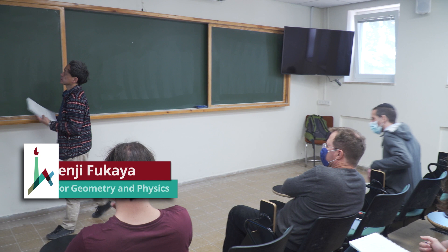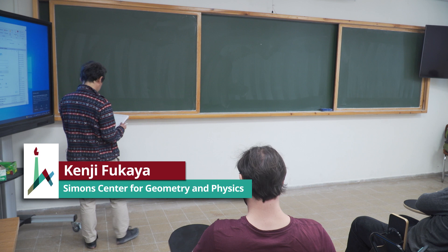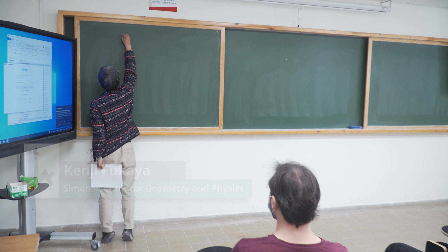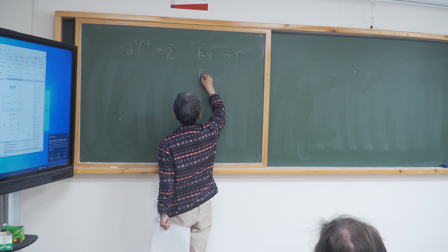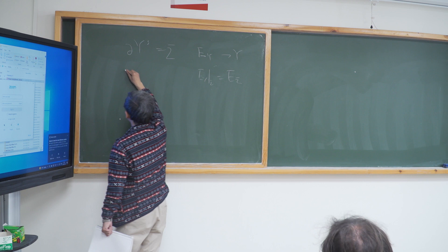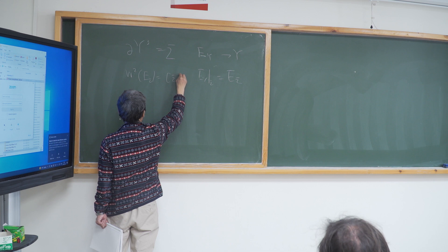In the last lecture, the second talk, I omitted one part of the story that I want to discuss now. Consider a three-manifold Y with boundary sigma, and an SO(3) bundle on Y such that its restriction to sigma is E(sigma), and W2, the second Stiefel-Whitney class of E(sigma), is assumed to be the fundamental class.